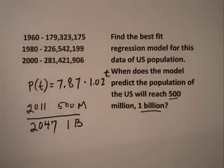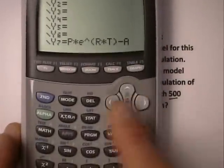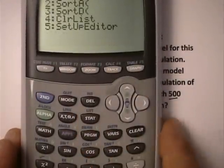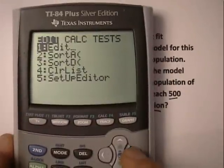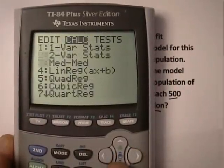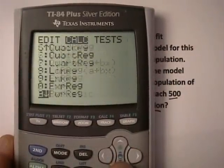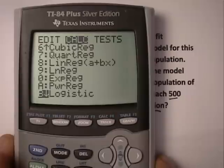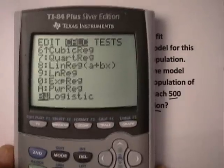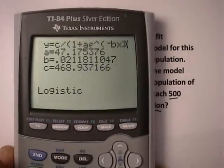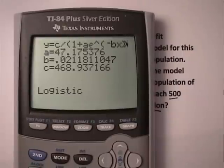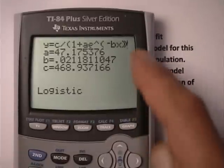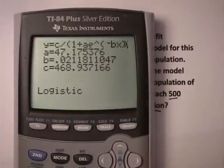So I'm assuming all the data's in, and we're going to hit the stat key, like we did for exponential regression, and we're going to go over to calc, and then down. It's all the way at the bottom, it says logistic, and then you press enter, and enter again, and it's working up here. You can see it going by.